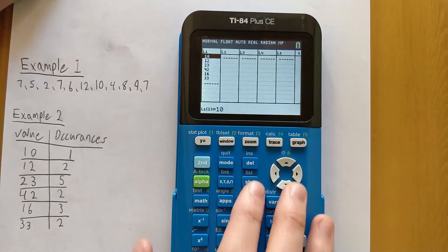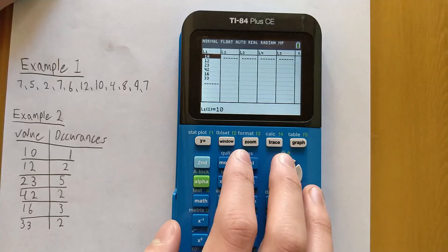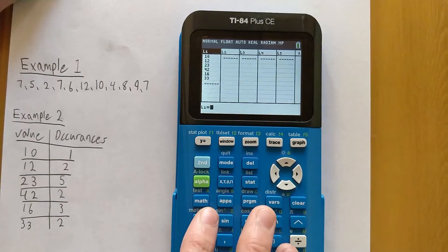And then the second problem you can have is that there are already values typed in here. So you can clear out any lists by pressing the up arrow key, selecting the list name, pressing Clear, and hitting Enter.